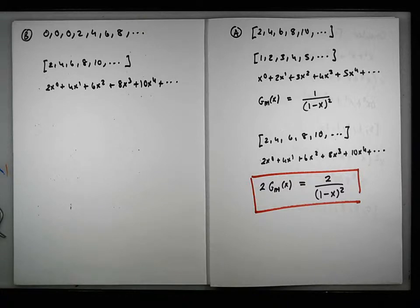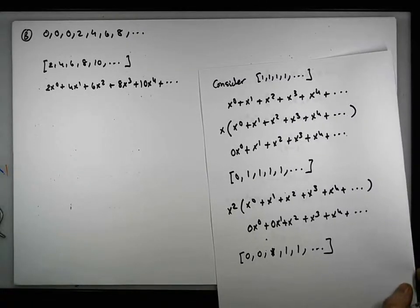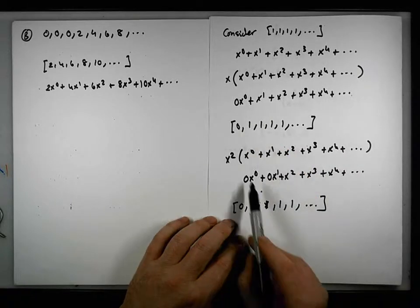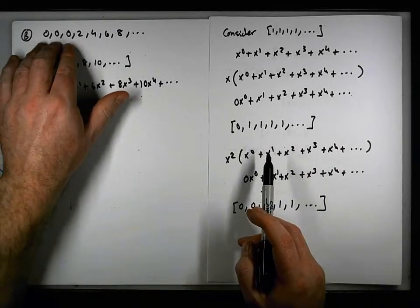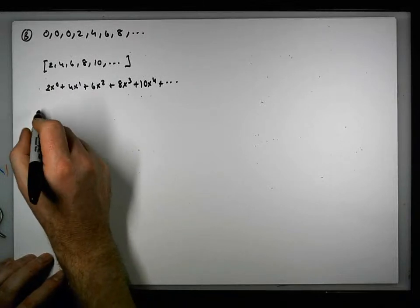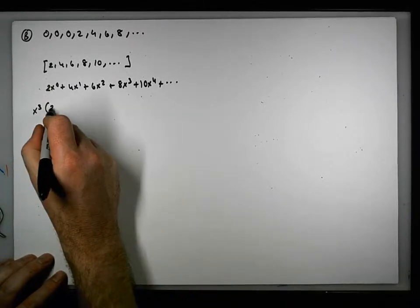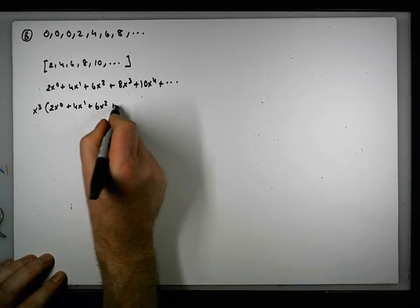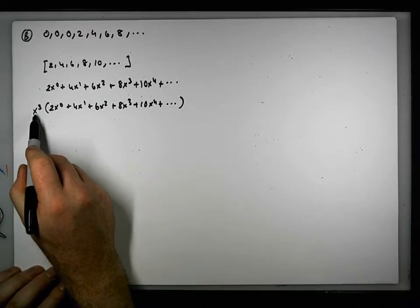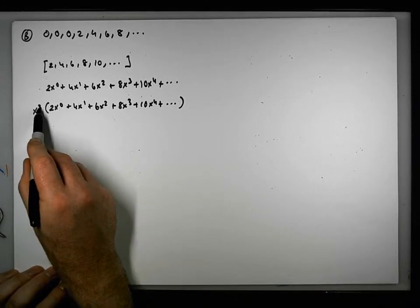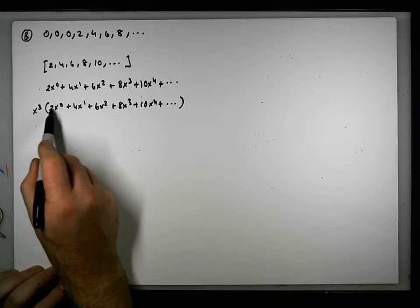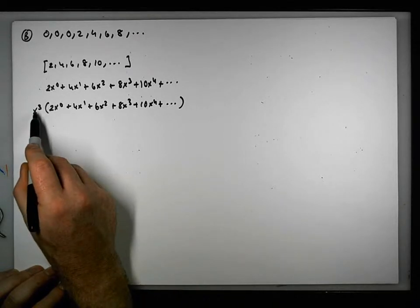If we want to introduce a leading zero we multiply by x; if we want to introduce two leading zeros we multiply by x squared. We want to introduce three leading zeros, so we multiply this power series by x cubed. So we're going to have x cubed times the power series: two x to the zero plus four x to the one plus six x squared plus eight x cubed plus ten x to the four. When you multiply terms with exponents you add the exponents, so three plus zero gives x cubed times two x to the zero equals two x to the three.